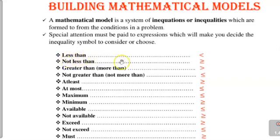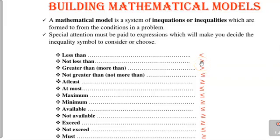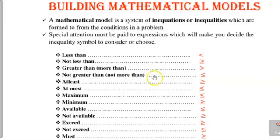The word 'less than' goes with the symbol less than (<). Then 'not less than' goes with the symbol greater than or equal to (≥) — that's the symbol for 'not less than.' Under 'not less than,' we are saying it should not be less than the actual value we have been given, but it should be more than that, or equal to itself. We also have 'greater than' or 'more than,' which uses just the greater than symbol (>). 'Not greater than' or 'not more than' uses the symbol less than or equal to (≤) — meaning we should not go beyond what we have, but it should be less than or equal to that value.